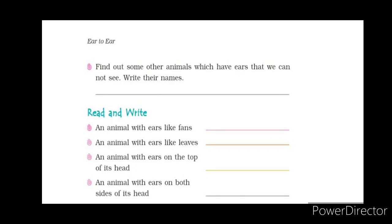Next: 'An animal with ears on both sides of the head.' Many animals have ears on both sides. One very common example is mainly found in West Bengal, also in the Sundarbans. I hope you can guess which animal I am talking about. It is the tiger. Tigers have their ears on both sides of the head. Lions and several other animals also have this. I am giving just one example; you can write more on your own.